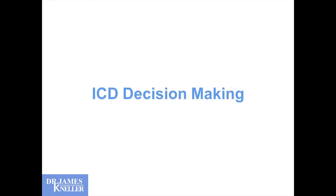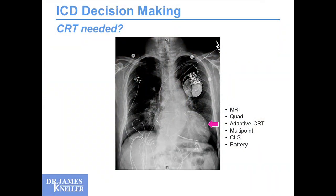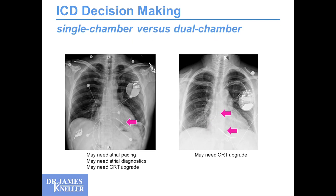A little bit about ICD decision making. When I get referred somebody for an ICD, I think about what my thought process is — which is probably more disorganized than it should be — on deciding what device I should offer any individual patient. The first thing I think of is, is a CRT needed? Hopefully they don't have a left bundle or I'm not anticipating a high pacing burden in the ventricle and I can rule out CRT, making it a much easier implant. Having made that decision, I'm left with deciding: should this be a single-chamber ICD or a dual-chamber ICD?